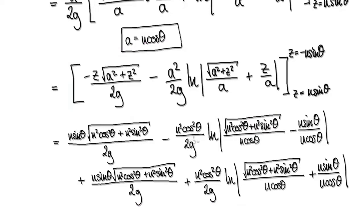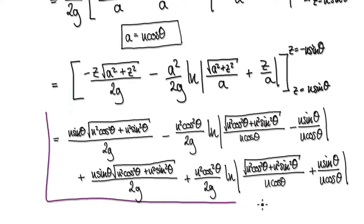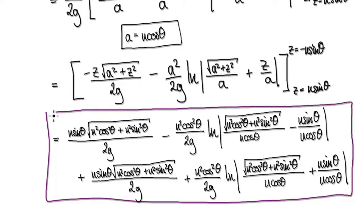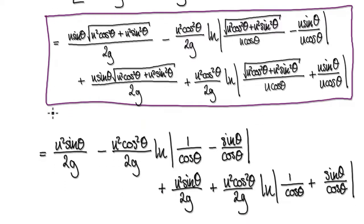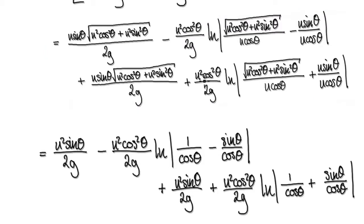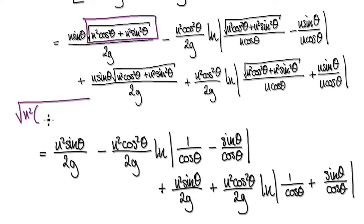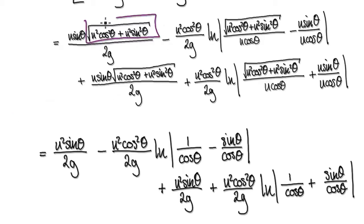We are currently at this stage. You can factor out U squared, and then you have cos squared theta plus sin squared theta — which equals one — so the whole expression under the square root simplifies to U squared. Taking the square root just gives U. So this whole ugly expression is really just U.